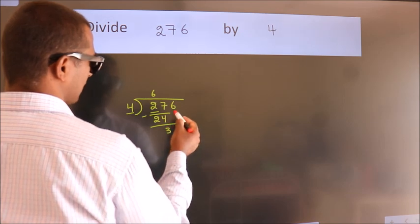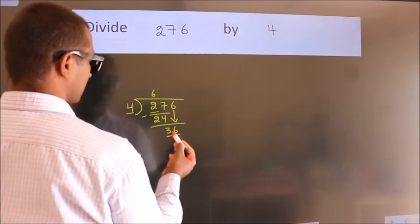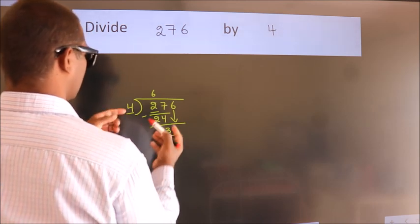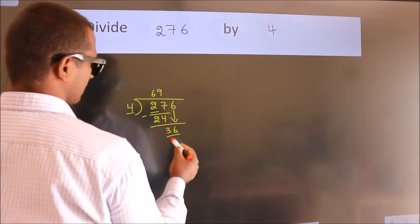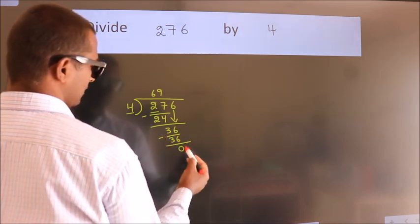After this, bring down the beside number. So, 6 down. So, 36. When do we get 36 in the 4 table? 4 nines, 36. Now we subtract and we get 0.